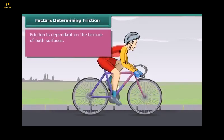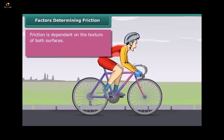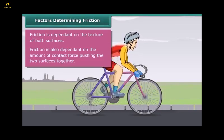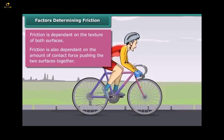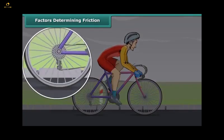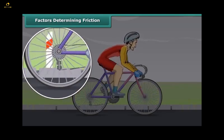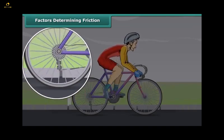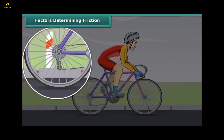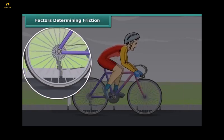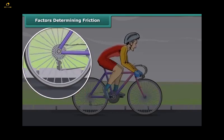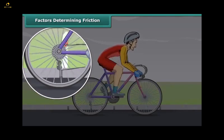Friction is dependent on the texture of both surfaces. Friction is also dependent on the amount of contact force pushing the two surfaces together. While in motion, the tires of the bicycle are rubbing against the surface of the road. When two surfaces rub on one another, the force comes into play. This force acts in the direction opposite to the direction of motion. Thus, it slows down the motion and finally brings the moving object to a stop.